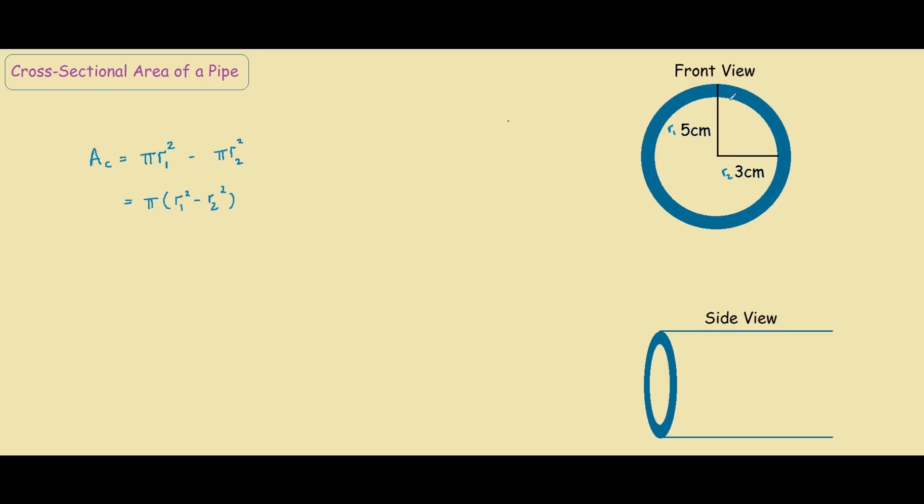So now we want to work out this problem, what we do is substitute the radius. So we have π times r1², which is 5², so 25, minus 3², so 9.